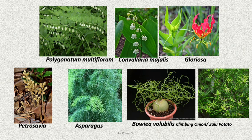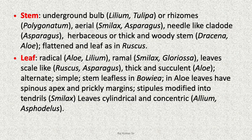The stem is an underground bulb as in Lilium or Tulipa, or it can be a rhizome as in Polygonatum. The stem is aerial in Smilax and Asparagus. Needle-like cladodes are present in Asparagus. There is a herbaceous, erect, and woody stem in Dracaena and Aloe.